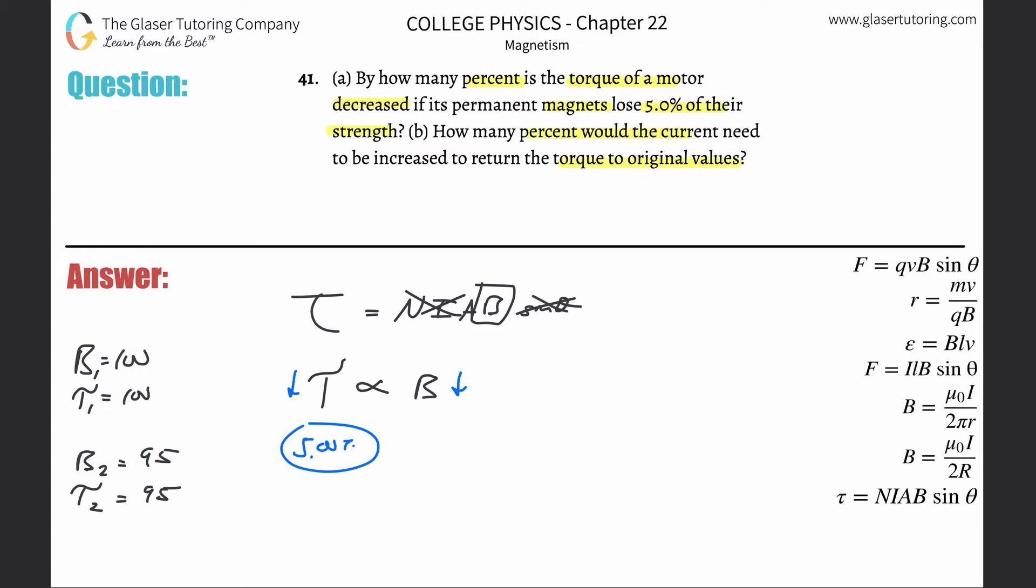Now, the question is this: how much would it take to bring the torque back up to its original value if the current were to be increased? And the current, if you notice here in the formula, is also directly proportional. So how much would it take to get this torque now back up to its original value? Using the formula, you see it's directly proportional just like B was as well. So in other words, if you started at 95, by what percent do you have to increase 95 by to get to 100?